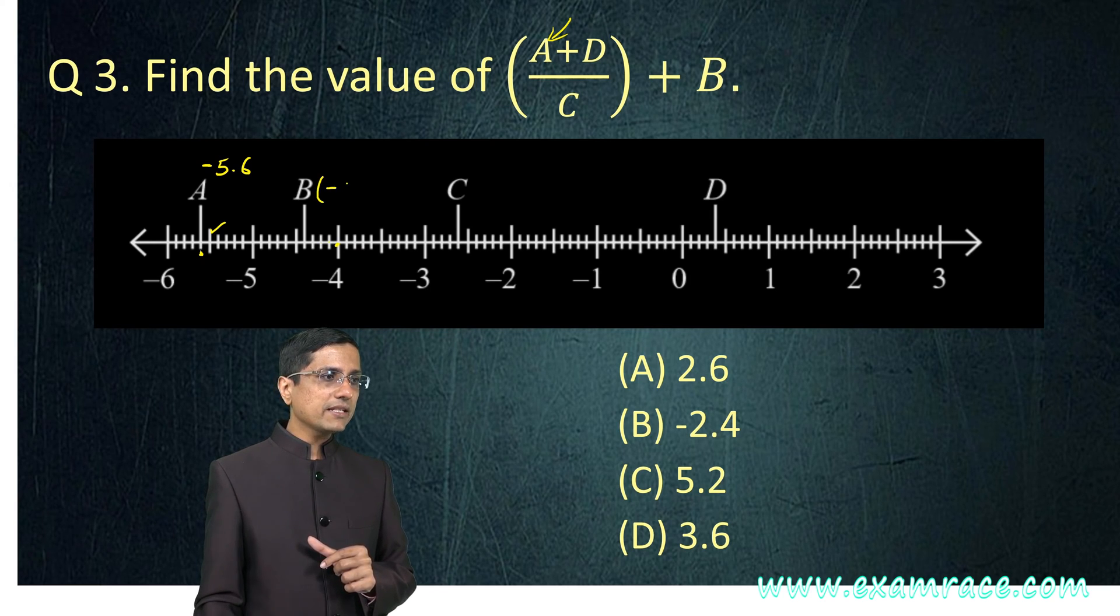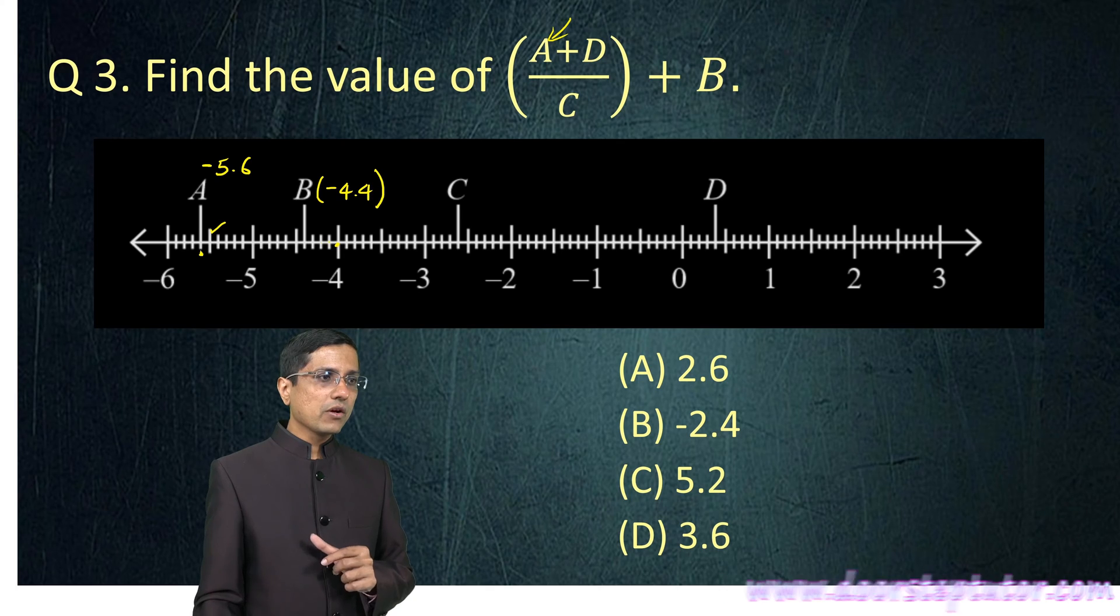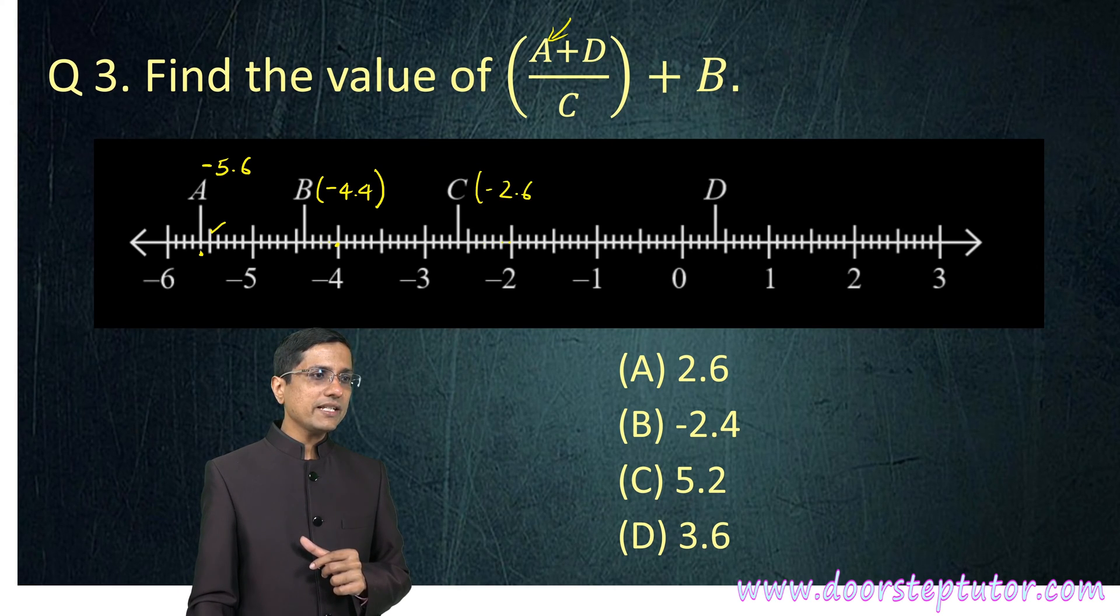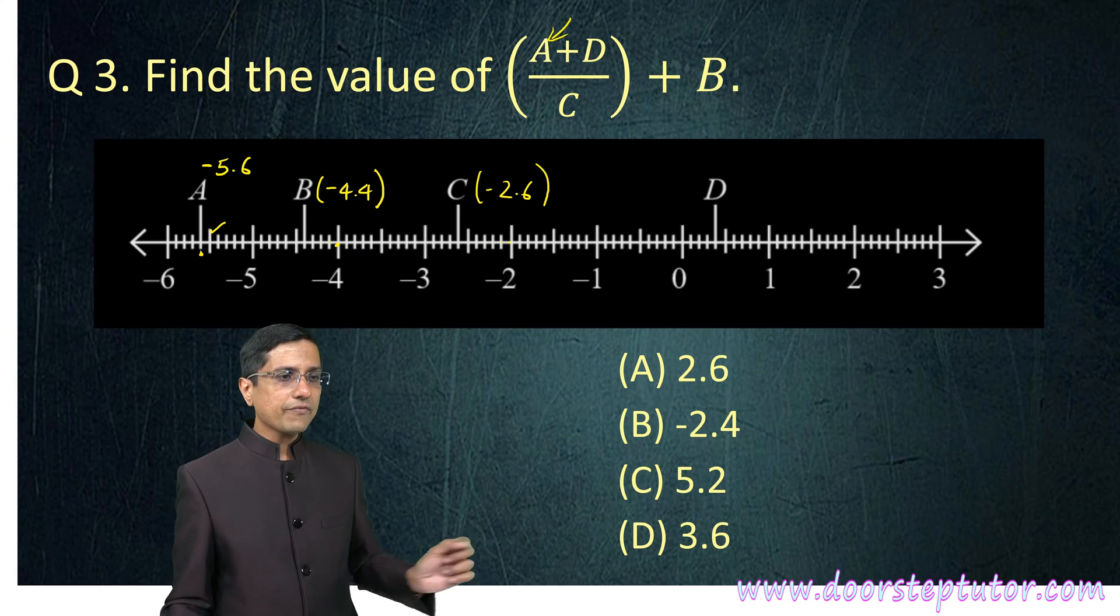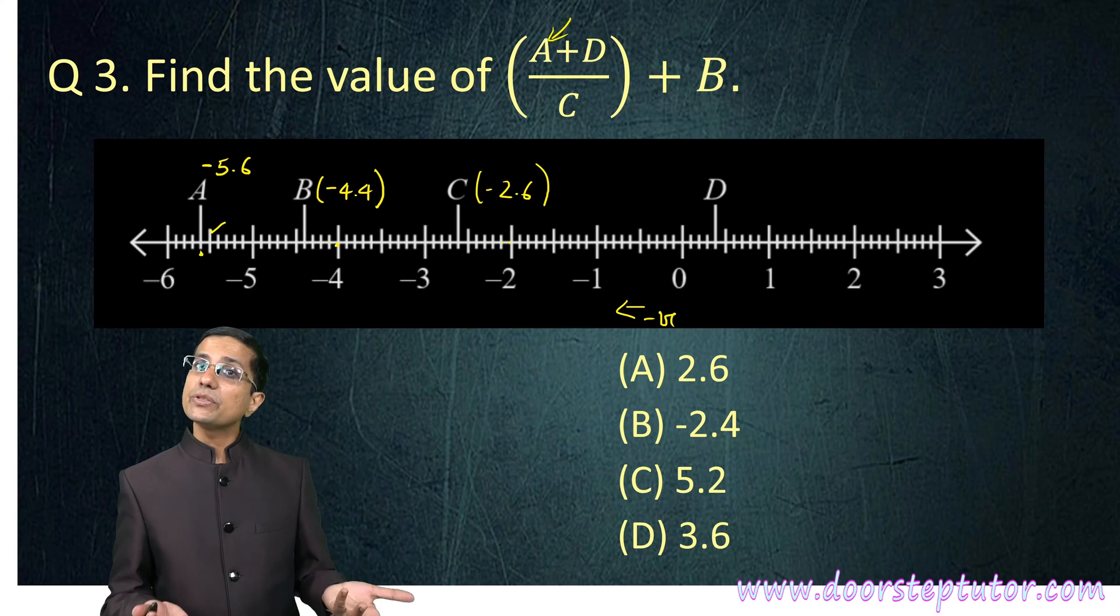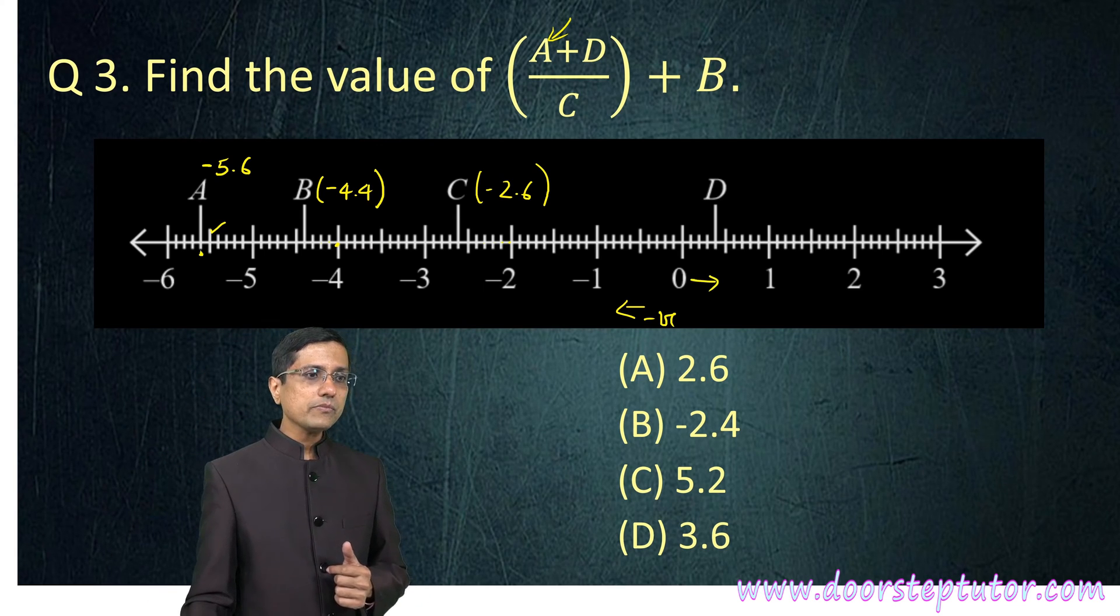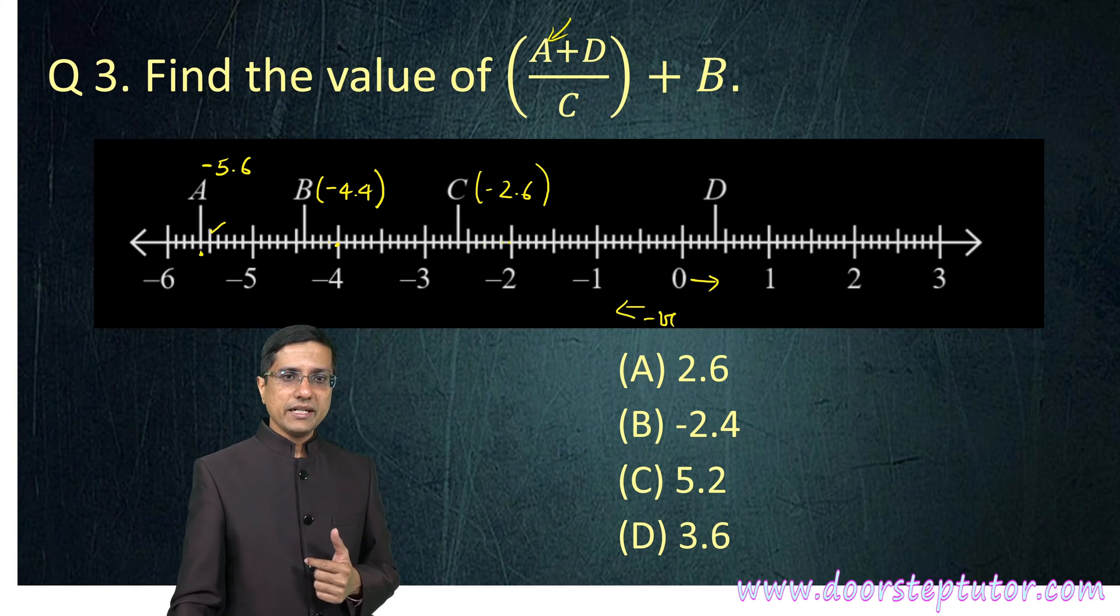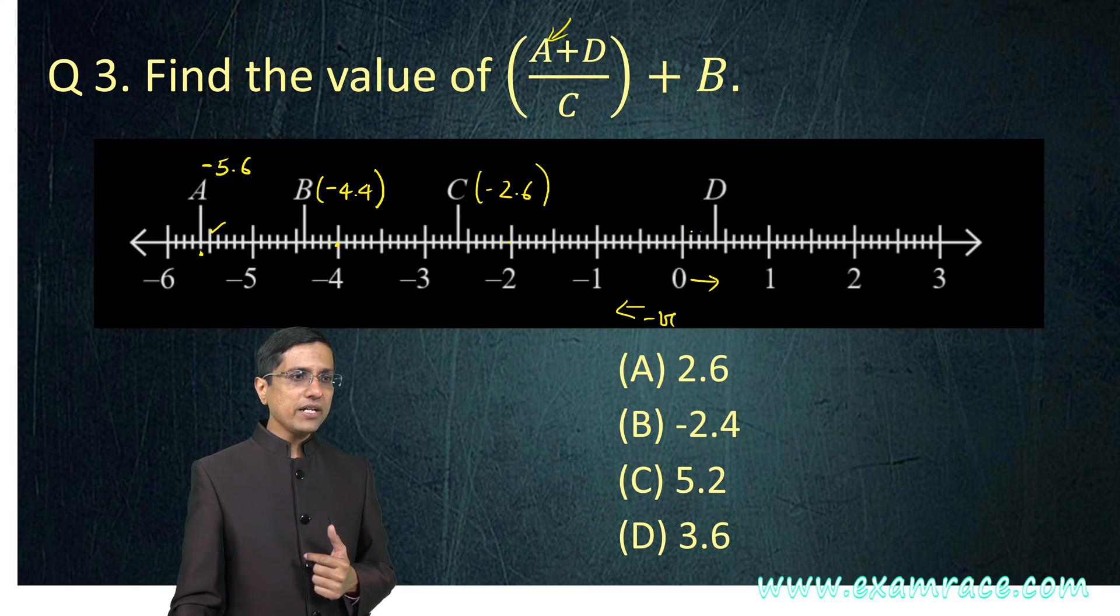What is the value of C? C is minus 2.6. These are all negative, left of 0. And now, we look at D which is positive, towards the right of 0. D is of course positive. D is nothing but 0 and then 1, 2, 3, 4. So, this becomes 0.4.